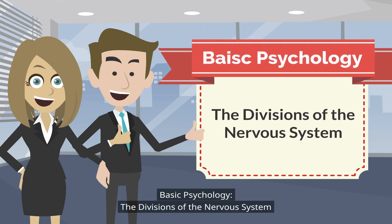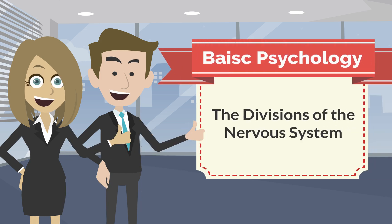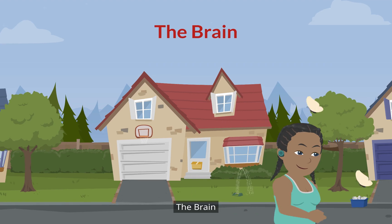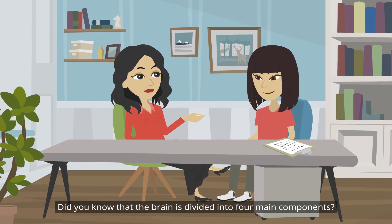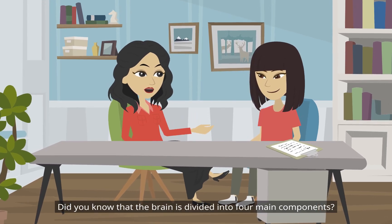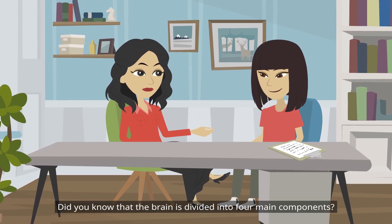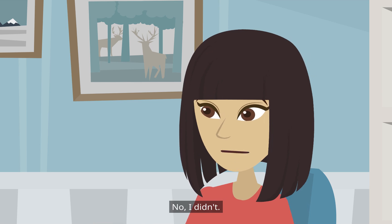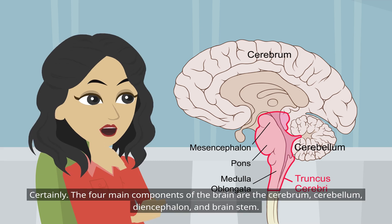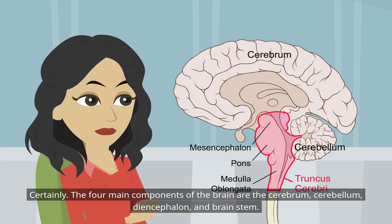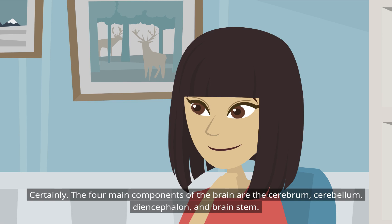Basic Psychology: The Divisions of the Nervous System. The Brain. Did you know that the brain is divided into four main components? The four main components of the brain are the cerebrum, cerebellum, diencephalon, and brain stem.